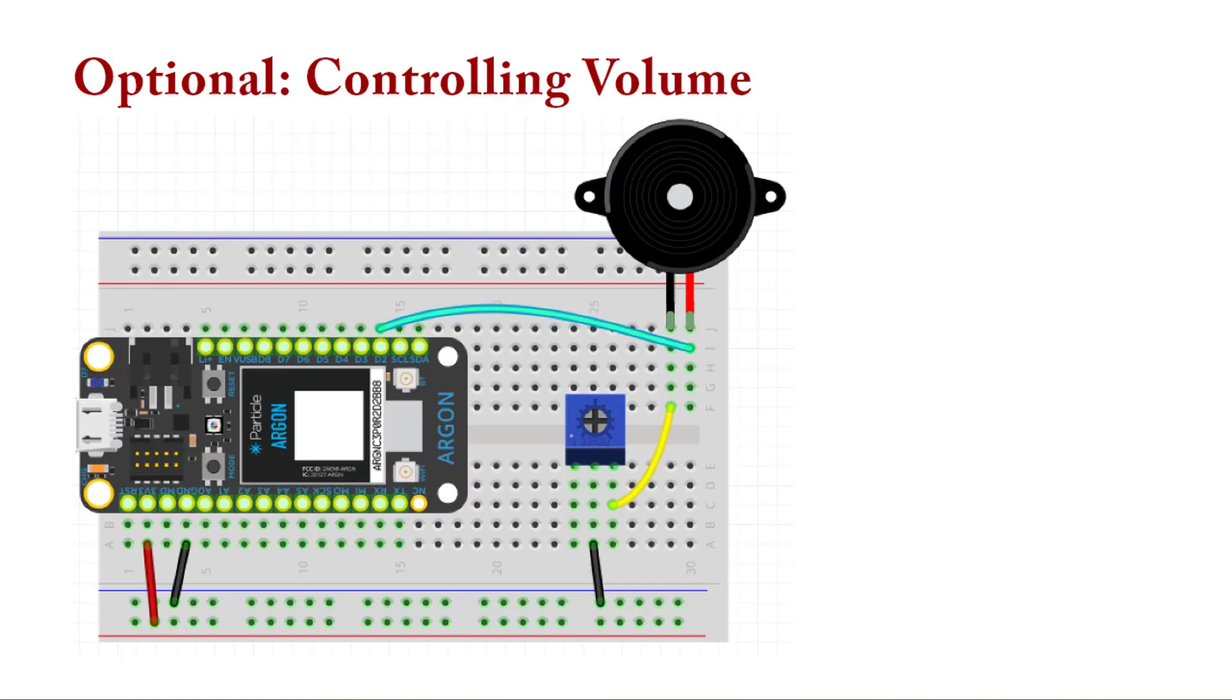Optionally, the Argon can't control the volume. So the pulse width modulation is only going to define the amplitude, the loudness. And so if you want to control the volume, if that's something you want to be able to do, we have to wire it a little bit differently.